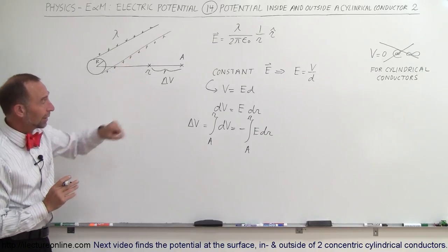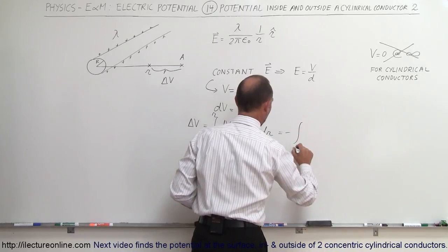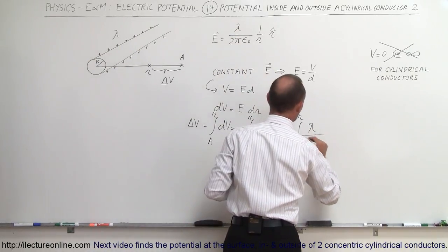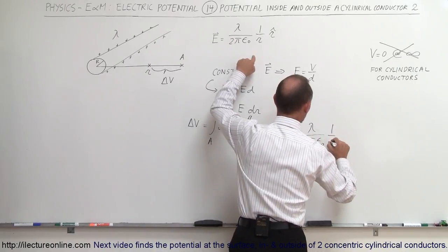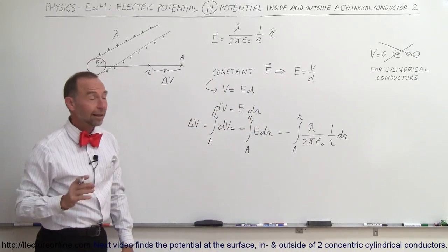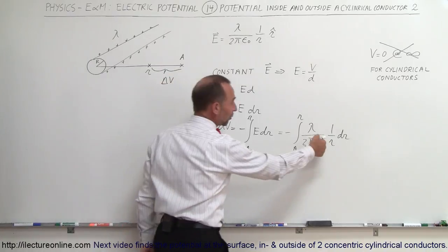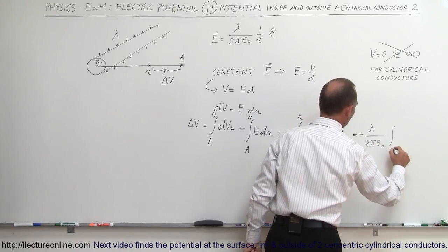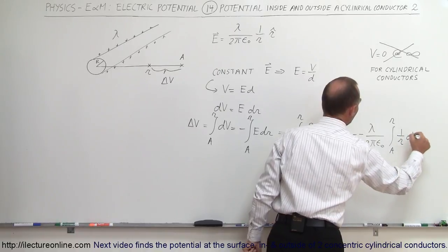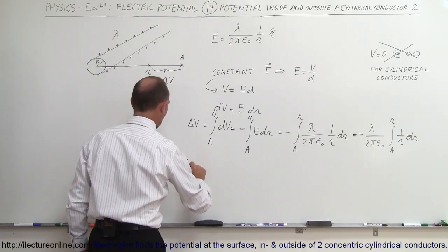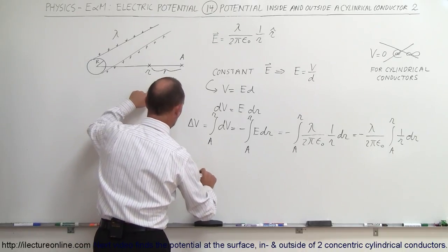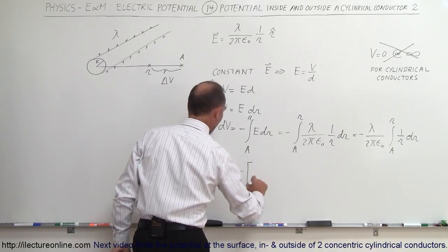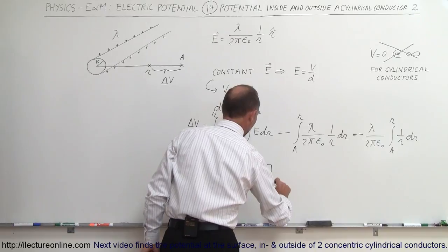Now we're going to plug in what E is equal to. This is equal to minus the integral from A to R of the electric field, which involves the linear charge density — this represents the linear charge density on the conductor — divided by 2π ε₀, times 1/R dr. Everything before the 1/R is a constant, so this can be written as minus lambda divided by 2π ε₀, times the integral from A to R of 1/R dr. The integral of that would be the natural log of R.